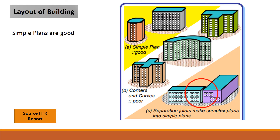The second important thing is the layout of the building. The horizontal layout of the building has to be quite simple, not complex. Simple plans are good, as seen in the figure from the IIT Kanpur report. Plans with re-entrant coordinates which are curved are not good in terms of development of torsional forces during an earthquake. A separation joint can be used to make complex plans into simpler plans, and they are preferred for earthquake resistant design.